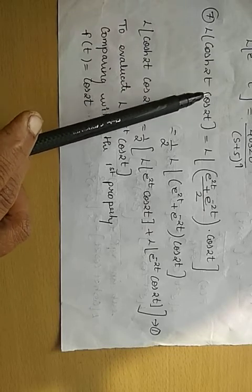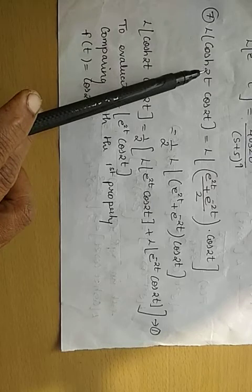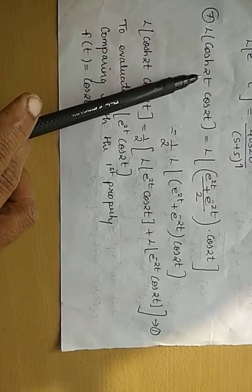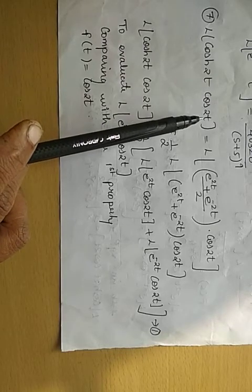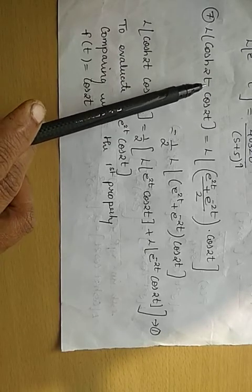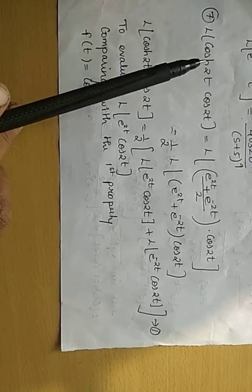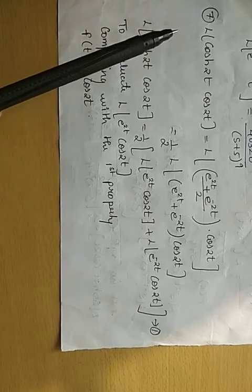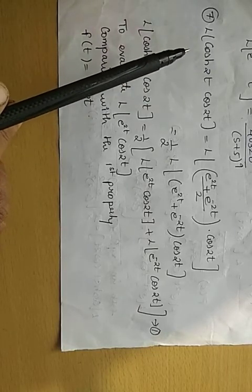It is a product of two functions, so please do not take the Laplace transform separately. Don't take the Laplace transform of cos hyperbolic 2t separately and cos 2t separately — that is wrong. We can only separate the Laplace transform operator when there is a plus sign or minus sign, not when it is a product or division.